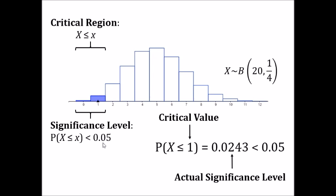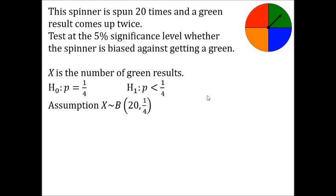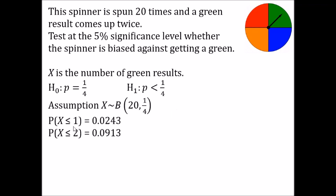Thinking about how you'd show your working in a question: the first three steps are variable, hypotheses, and distribution assumption. Then, the only two probabilities you need to write down are the one just below 5% and the one just above 5% — in this case x less than or equal to 1 and x less than or equal to 2. Because we want the one that's less than 5%, we choose x less than or equal to 1 as our critical region. It's worth noting which is below and which is above 5% for clarity.